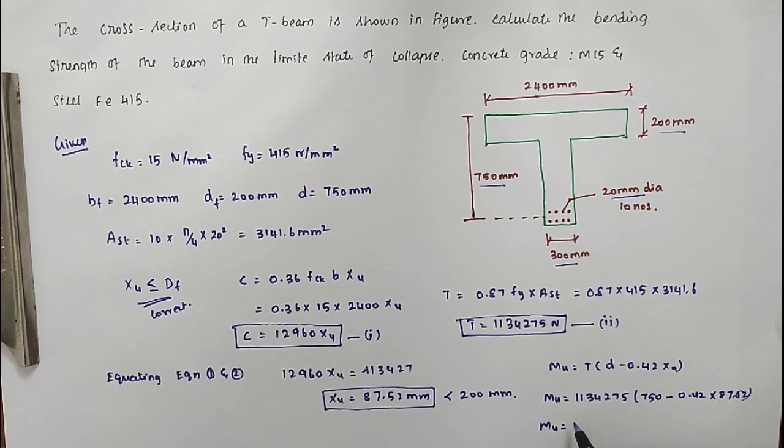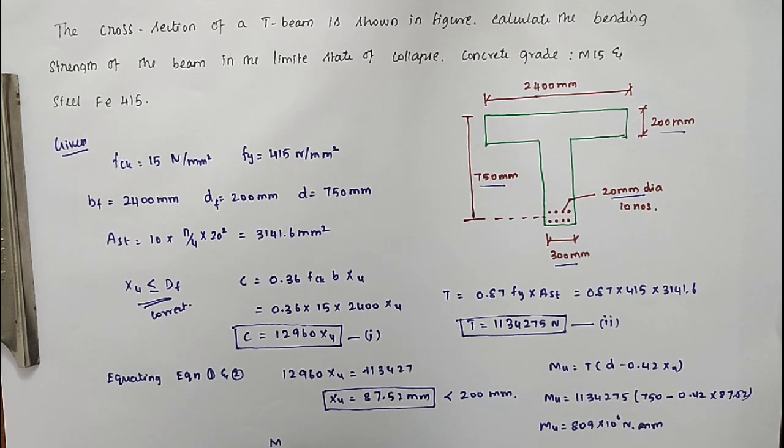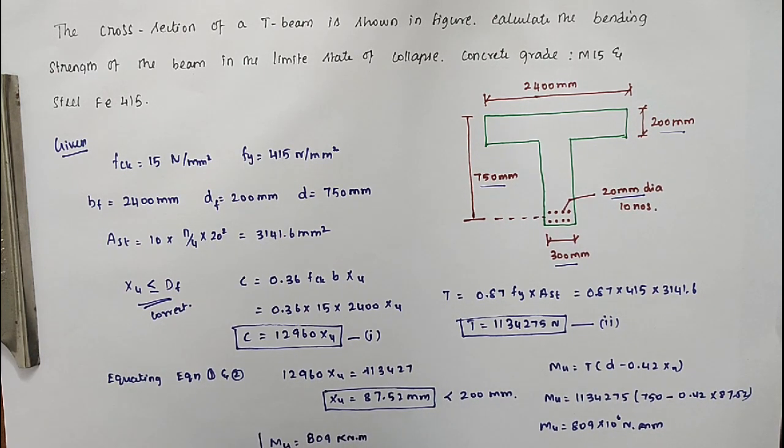Solving this we got MU equal to 809 into 10 power 6 Nmm. Converting to kilonewton meter: MU equal to 809 kilonewton meter. This is the bending moment.